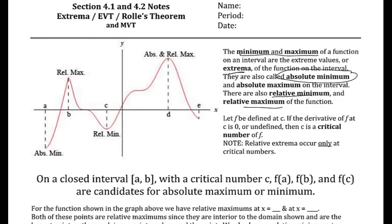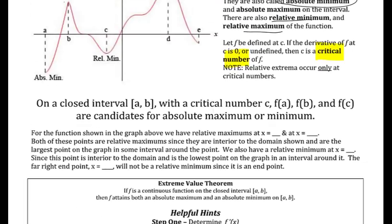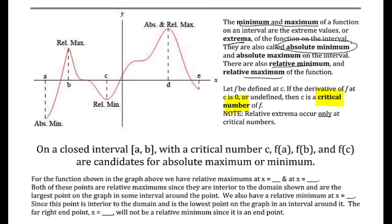A term I'm going to use quite a bit is critical number. A critical number is when the derivative is zero or undefined. Relative extrema can only occur at critical numbers. Notice the slope of the tangent line at all of those relative extrema all have a slope of zero temporarily.